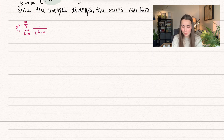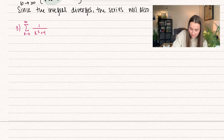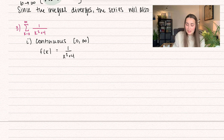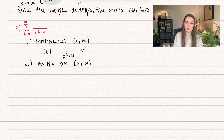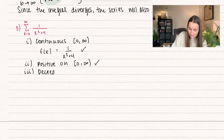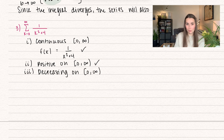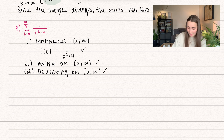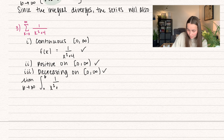Alright, we have one more: k starting at 0 going to infinity of 1 over k squared plus 4. Let's make sure it satisfies the requirements. First, it's continuous on the domain from 0 to infinity. Our function is 1 over x squared plus 4, and the domain contains no illegal values, so it's continuous. We also want it to be positive: since we're squaring x values and plugging in positive x values, this is always positive. Our final condition is that it's decreasing — as we plug in larger and larger x values, the denominator gets bigger and bigger, so 1 over the denominator gets smaller and smaller. All three conditions are satisfied, so let's apply the test.